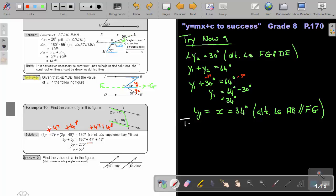Let's look at try now 10. I gave you the hint. Find the value of K in the figure. Can I just highlight it for you? What letter do you see there? It looks like an F. So, if it's an F, I can say that 3K plus 30 is equal to 4K minus 10. What will be my reason? It's the F angles. We call it corresponding because the lines are parallel lines.